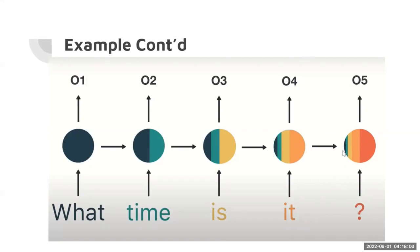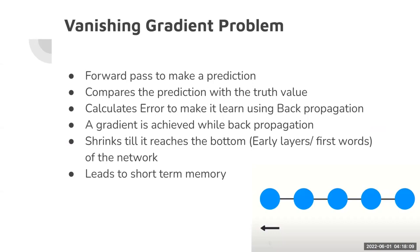What exactly is the problem and how does it occur? There is a concept called the vanishing gradient problem, which occurs when training the model. You forward-pass a prediction, compare it with the truth value, and using a loss function get an error. You use that error to make the model learn using backpropagation, which builds up a gradient that shrinks as you reach the bottom layers — where the early words are. As the gradient shrinks, it has difficulty remembering those words, which leads to short-term memory.